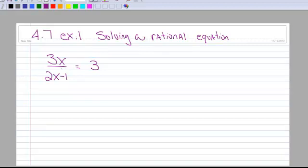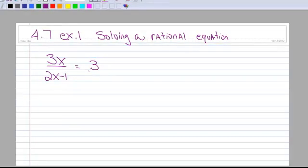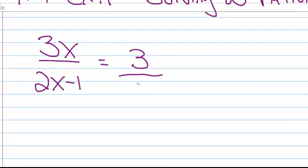So we've got 3x over 2x minus 1 equals 3. We want to solve this. This is a rational equation because we have what looks like a fraction on the left-hand side. And then you recall that if I have a whole number on the right-hand side, I can simply just put that over 1. And I like to put parentheses around a denominator that has more than one term.